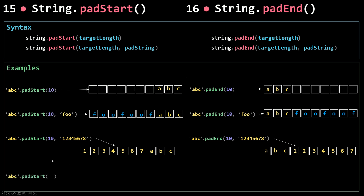For the last example, I'm using a target length that is less than the original string length — here we have 3 and 2, and 2 is less than 3. In this case, padStart will just return your original string. The same goes for padEnd when you use a target length less than your original string length — it just returns the original string. And that's it for padStart and padEnd. Let's move on to the next method.